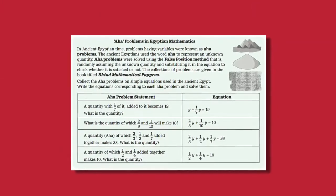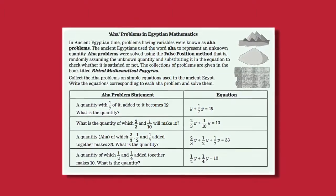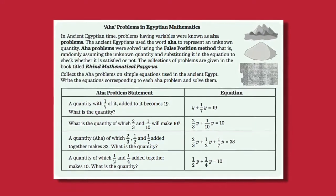Do you know there is something called AHA problems? In ancient Egyptian time, problems having variables were known as AHA problems. They used the word AHA to represent an unknown quantity. Doesn't that sound interesting?